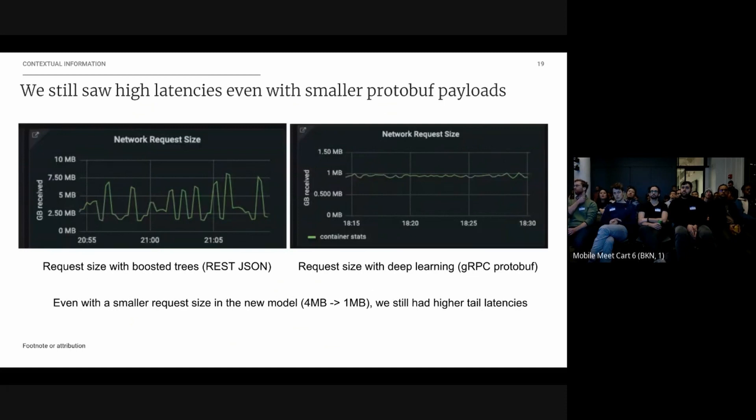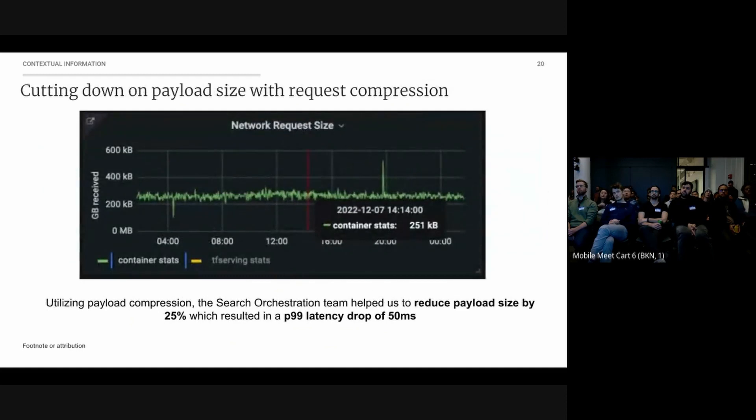Using our observability, we saw that it was actually the first byte to last byte transmitted from our orchestration system to our serving layer. So we worked with our amazing partners within Search, within ML enablement as well, the Search orchestration team, to reduce payload size by 25% using payload compression with gRPC. So this resulted in a P99 latency drop of roughly 50 milliseconds. And as you can see here, the payloads are down to like 250 kilobytes or something like that. So a dramatic reduction in payload size, dramatic improvement in latency, and the cost to serve these models, which is great.